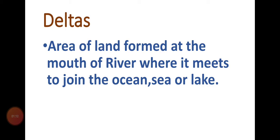Delta areas are very fertile and they are excellent for rice cultivation, because the rice crop needs too much water. Delta is the area of land formed at the mouth of a river where it meets the ocean, sea, or lake. It is very fertile and good for rice cultivation. In Pakistan, the most famous delta is Keti Bandar near Karachi, which lies at the Indus River.